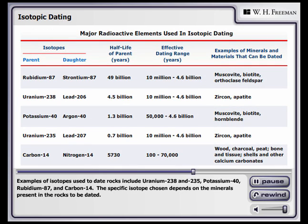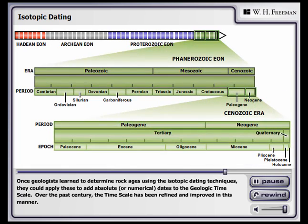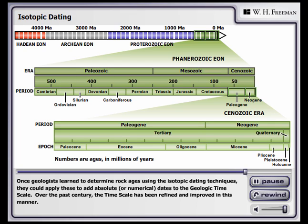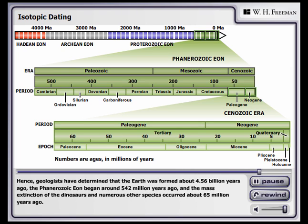Examples of isotopes used to date rocks include uranium-238 and uranium-235, potassium-40, rubidium-87, and carbon-14. The specific isotope chosen depends on the minerals present in the rocks to be dated. Once geologists learned to determine rock ages using isotopic dating techniques, they could apply these to add absolute or numerical dates to the geologic timescale. Geologists have determined that the Earth was formed about 4.56 billion years ago, the Phanerozoic Eon began about 542 million years ago, and the mass extinction of the dinosaurs and numerous other species occurred about 65 million years ago.